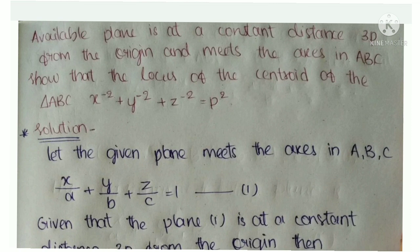The question is: A variable plane is at a constant distance 3p from the origin and meets the axes in A, B, C. Show that the locus of the centroid of the triangle ABC is x^(-2) + y^(-2) + z^(-2) = p^(-2).